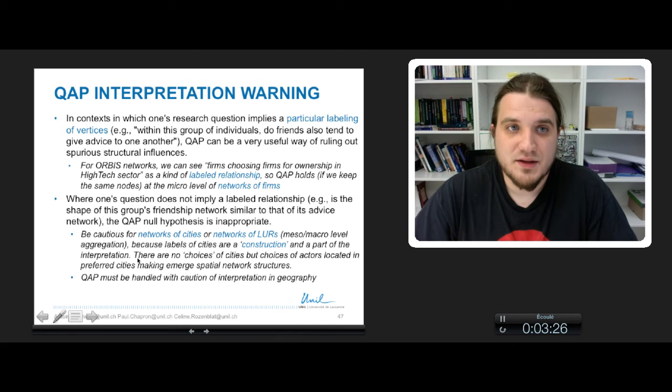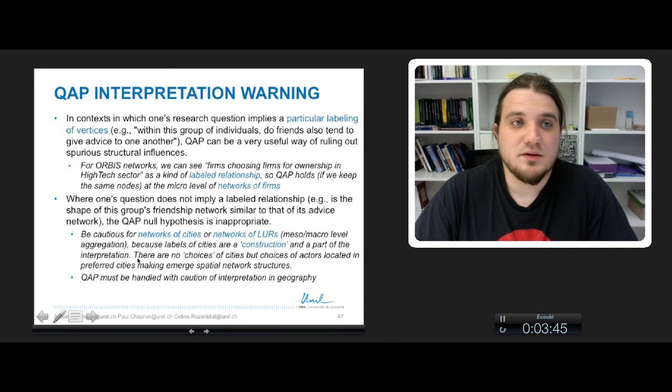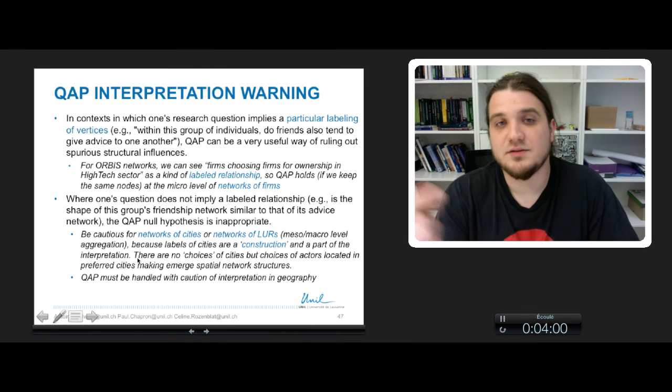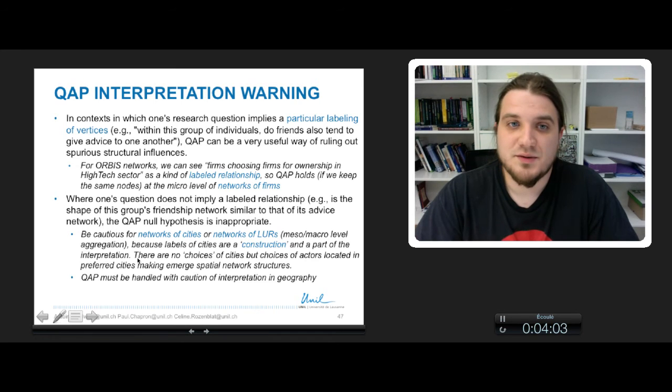The third warning is about the type of research question that you try to address. When your research question implies a particular labeling, QAP can be very useful to remove some false reasons of correlation. So that is the case for us in Orbis Networks. Orbis Networks perfectly fits the QAP test because we can see firms choosing firms for ownership as a kind of labeled relationship. We can say that this firm has nominated another firm to hold a part of its capital. So at the micro level of networks of firms, QAP is perfectly fit.